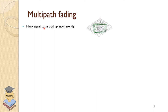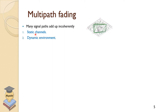Multipath results as many paths add up incoherently — they could add up constructively or destructively. We can think of a simple scenario where we have static channels: the receiver and the transmitter are not moving, so the channel would be static. There will be multipath and a fading effect, but it's going to be static.